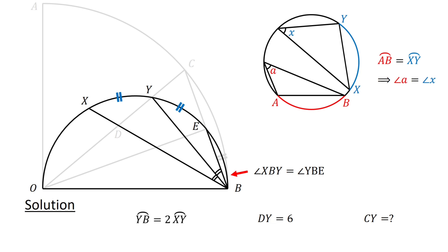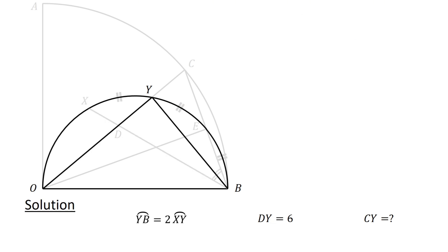Next, consider the lines OY and BY and the semicircle. Angle BYO is an angle in the semicircle and therefore equals 90 degrees.